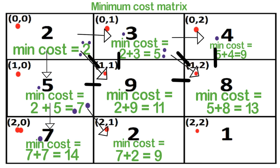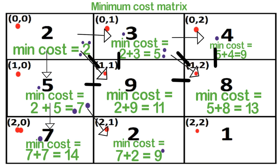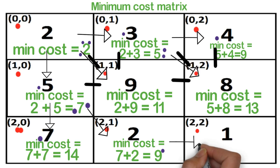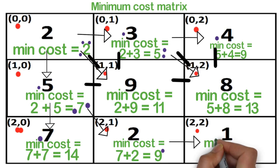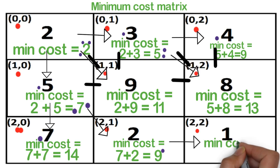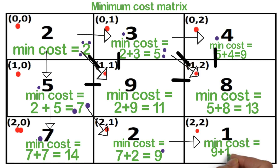Finally, to reach cell 2,2, the minimum cost surrounding cell is the left cell 2,1. So the minimum cost to reach cell 2,2 is 9 plus 1, which equals 10. This completes the approach we will use to solve the problem.